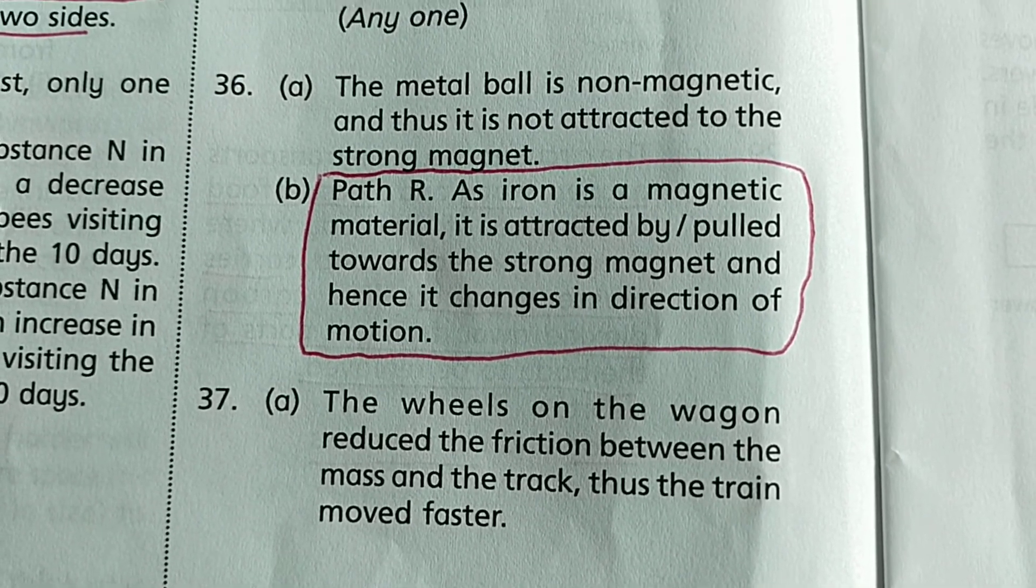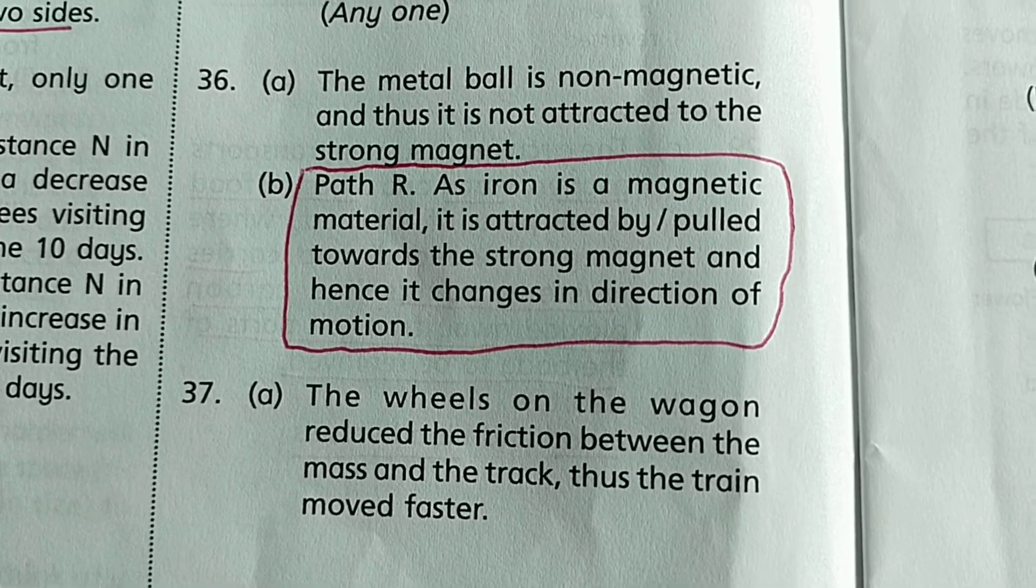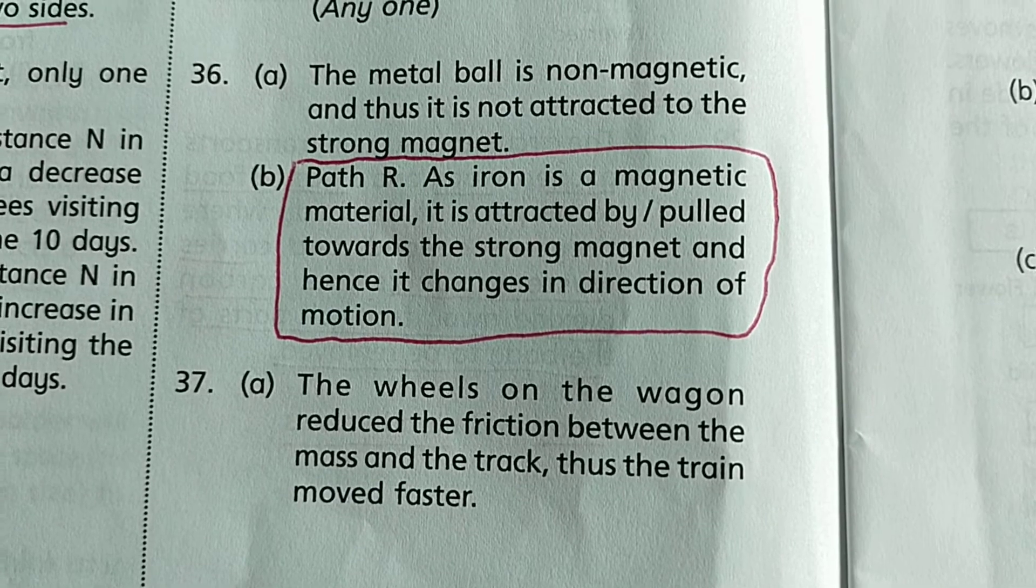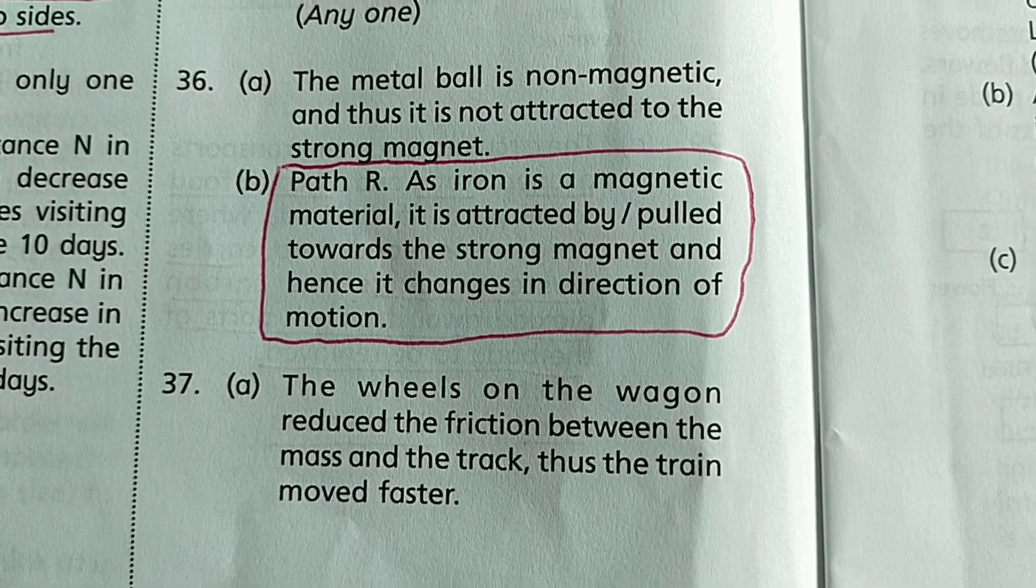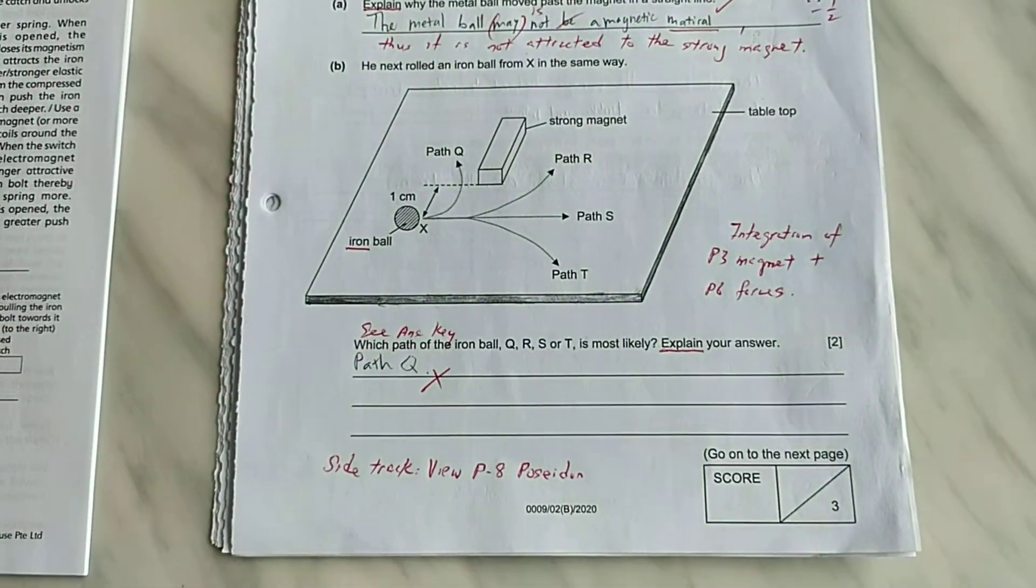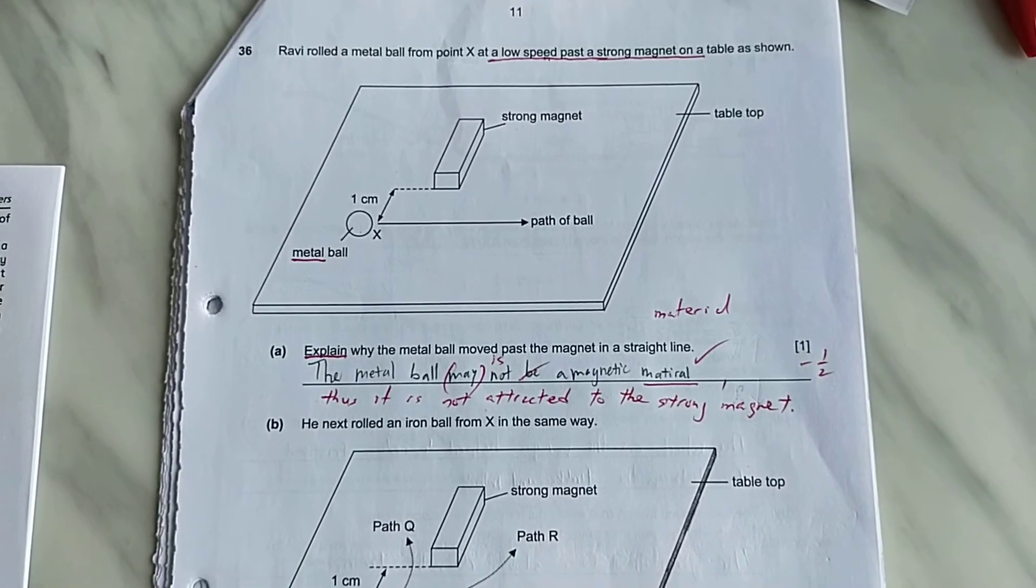It's path R, as iron is a magnetic material it is pulled towards the strong magnet and hence it changes in direction of motion. So I wish you all the best in the coming PSLE science and you can look forward to my training in One Academy.